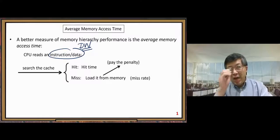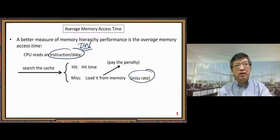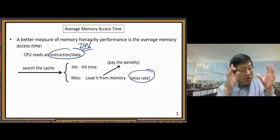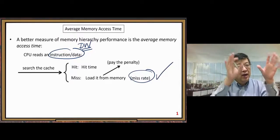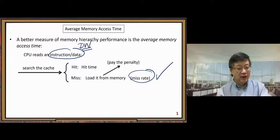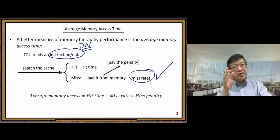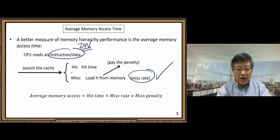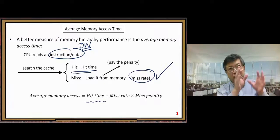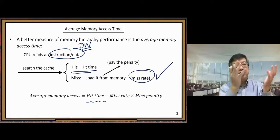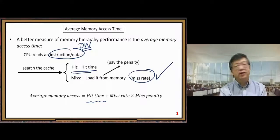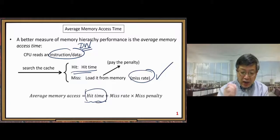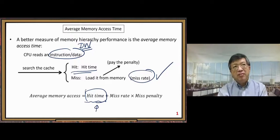The cache miss doesn't happen all the time — it only happens with a probability given by the miss rate. The miss rate gives us the percentage of cache misses. We factor in that miss rate part, then we can get the average memory access formula. There are two steps: first, the hit time when we start looking for the requested double word in cache — we always pay the hit time, no matter what, so that term must be added.